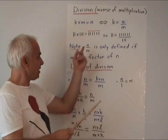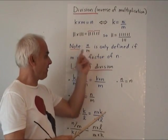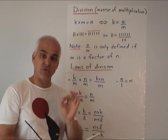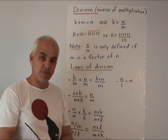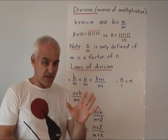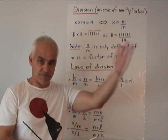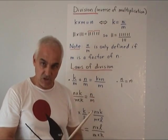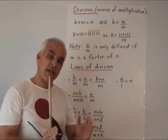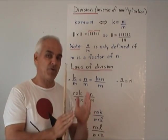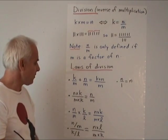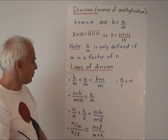We want the result of a division to be another natural number, so we are not working in the realm of fractions yet — that's considerably more advanced. We're just sticking with natural numbers. That's a very important point.